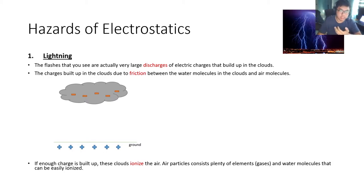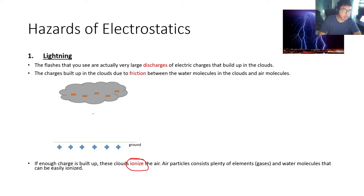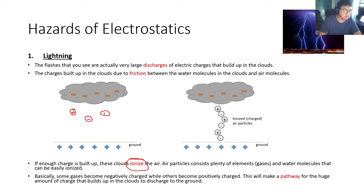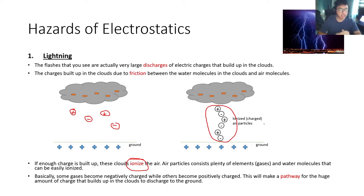When the cloud is charged, it can ionize the air particles. The air particles are usually neutral — they are molecules and atoms. But because of the charged cloud, the air molecules become ions, meaning they become positive and negative charges. At some point, the air molecules will line up in an alternating pattern of positive and negative charges, creating a pathway for the charges inside the cloud to go to the ground.